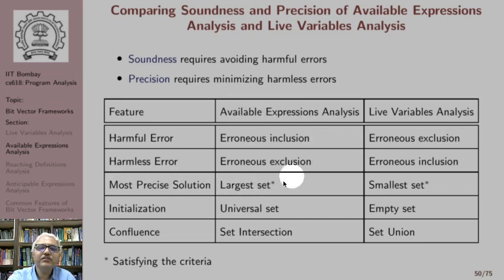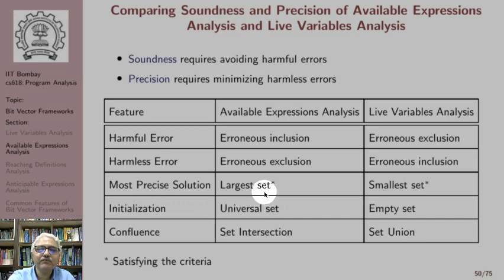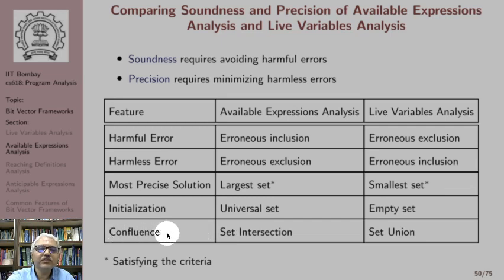In case of available expressions analysis, the largest set that satisfies the criteria is most precise. In case of live variables analysis, the smallest set of variables that satisfies the criteria is most precise. Therefore, our initialization is the universal set in available expressions analysis because we want to compute the largest set, and empty set in live variables analysis. As a consequence, the confluence operation is set intersection in available expressions analysis and set union in live variables analysis.